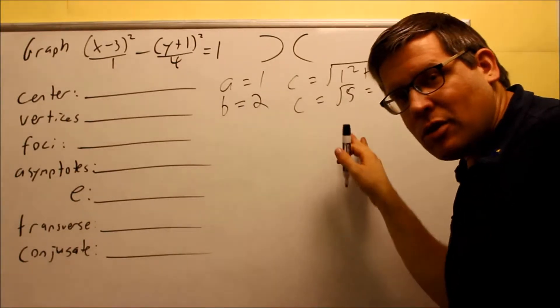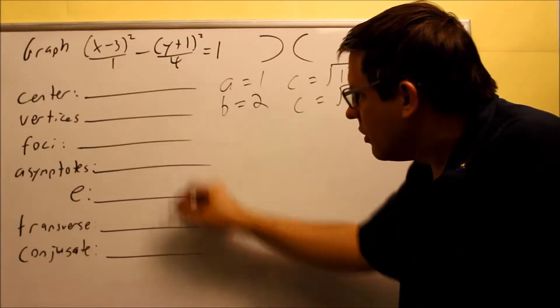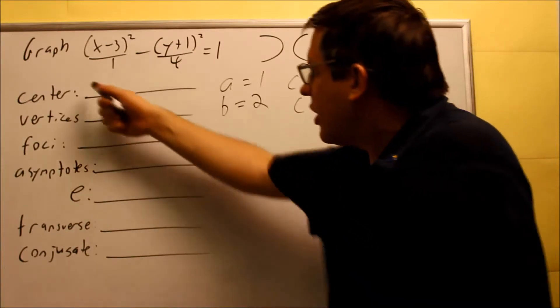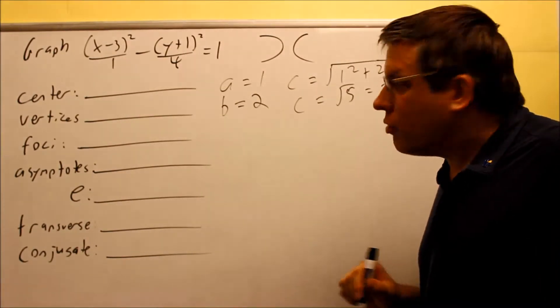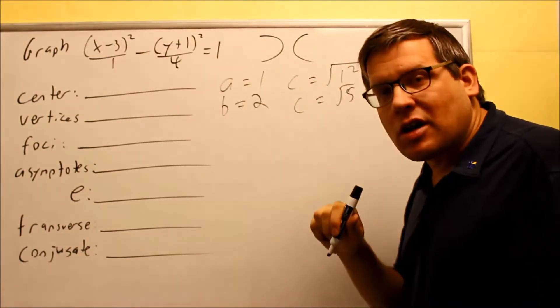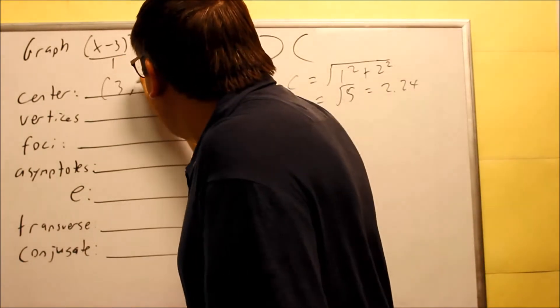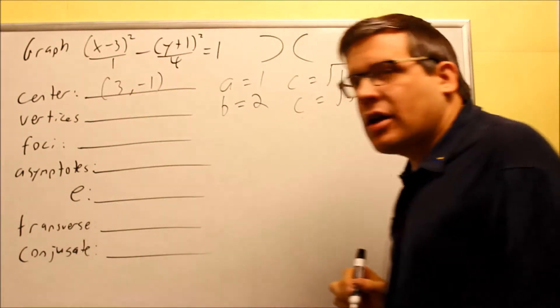Now we have this piece of information. We have A, B, and C. We can answer some of these questions here. Now center, we can get that directly off of the formula. It's opposite sign of this and opposite sign of that. So we're going to get 3 and negative 1. That's going to be your center.